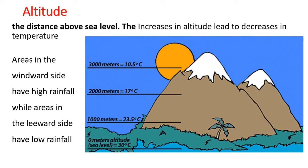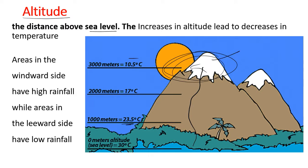Next is altitude — the distance above sea level. The increase in altitude leads to a decrease in temperature; the higher you go, the colder it becomes. As you move up, the temperature decreases. For example, at zero meters altitude it was 30 degrees Celsius, and at 1000 meters it reduces to 23.5 degrees. At the top of a mountain you can see snow, because the temperature is really low.